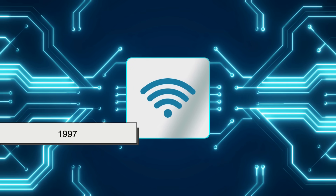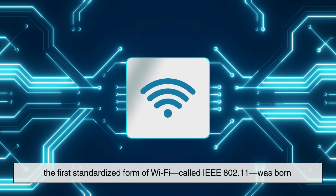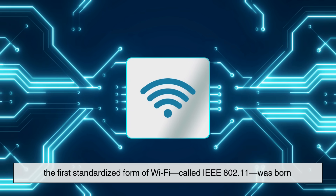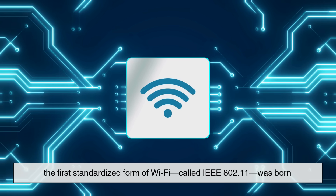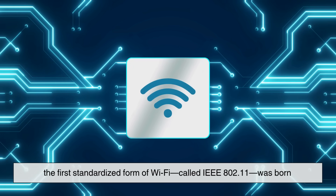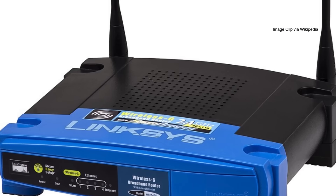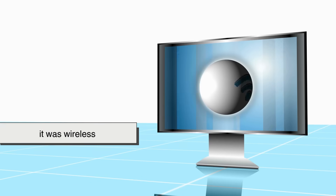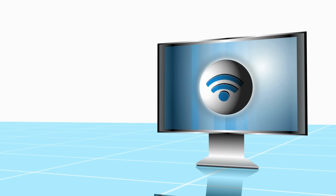Decades later, in 1997, the first standardized form of Wi-Fi, called IEEE 802.11, was born. It wasn't fast, it wasn't even stable, but it was wireless, and that changed everything.